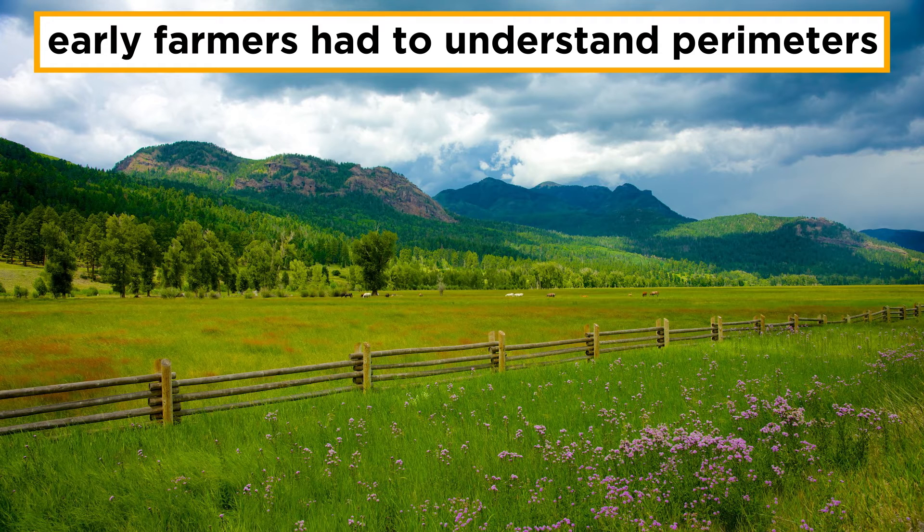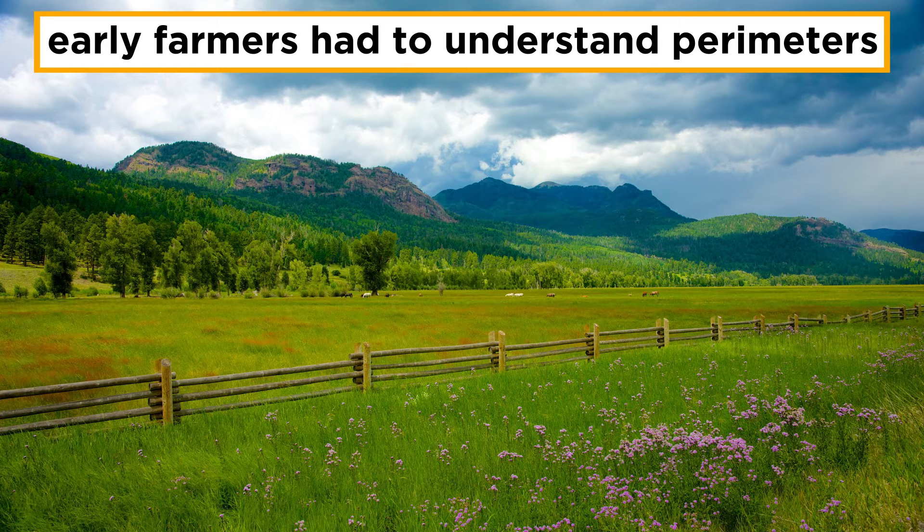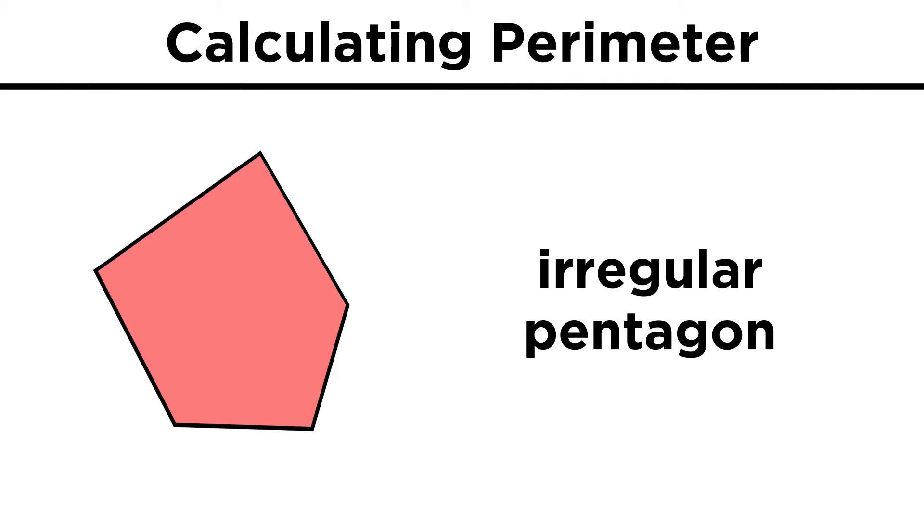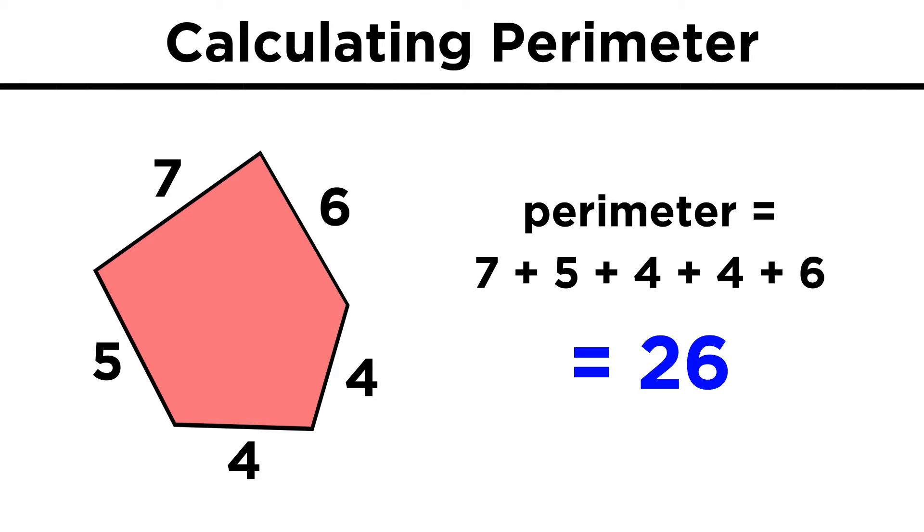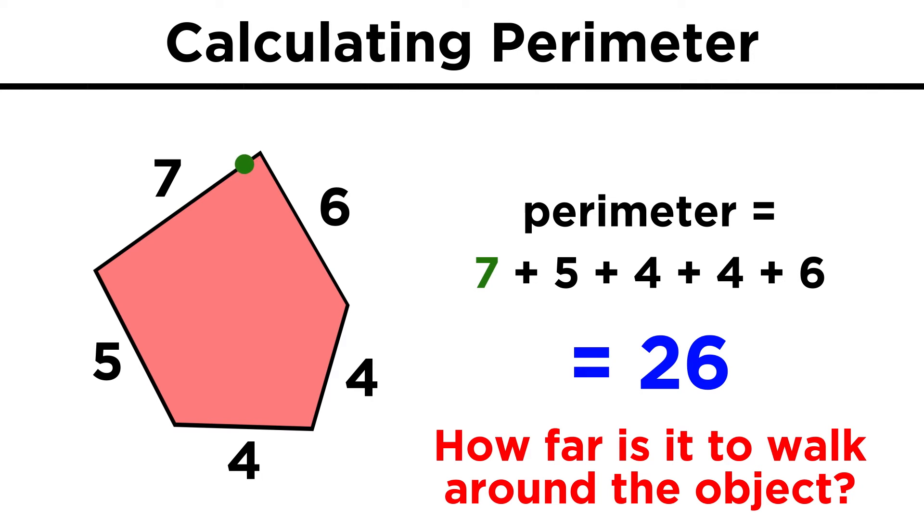This was one of the earliest mathematical necessities, as early farmers had to know how much material they needed to enclose their land and guard their animals or crops. Here is an irregular pentagon. Given these side lengths, we just add them up, and that's the perimeter. This is the same thing as asking if you walked along each edge of the shape, all the way back to where you started, how far did you walk?